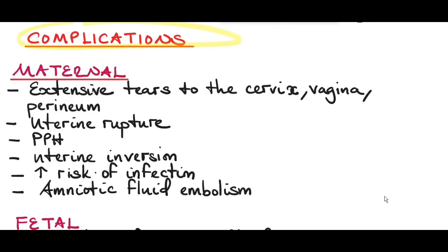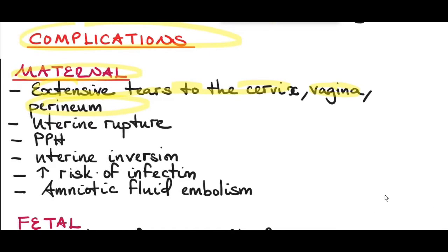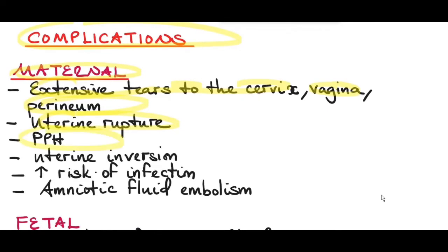The maternal complications of precipitate labor include extensive tears to the cervix, vagina, and perineum, because of fast and uncontrolled pressure to the soft tissues. There is also a risk of uterine rupture due to a hypertonic uterus. There's a risk of postpartum hemorrhage after delivery due to an atonic uterus, because the smooth muscles of the uterus can become tired from the vigorous hypertonic contractions. There is also a risk of uterine inversion, though this complication is quite rare, and an increased risk of acquiring an infection.